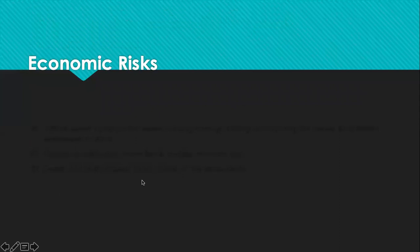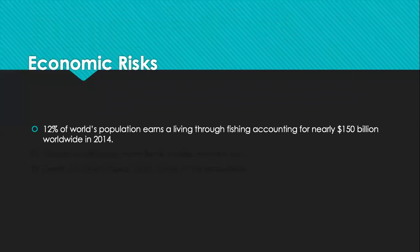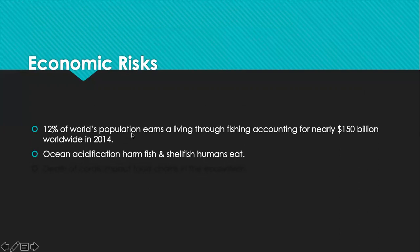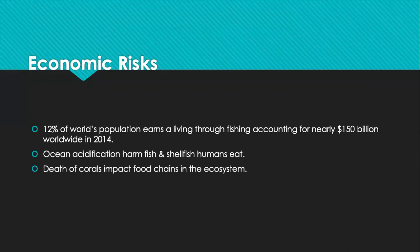What are the economic risks? Currently, 12% of the world's population earns a living through fishing, accounting for nearly 150 billion dollars worldwide in the 2014 studies. Ocean acidification harms fish and shellfish that humans eat, and with the death of coral, it will impact the food chain and ecosystem — so human beings and animals will all be affected. Let us stop ocean acidification, because it's affecting our life and the organisms in the marine world. Let us play our part and think of how we can reverse this effect. Thank you.